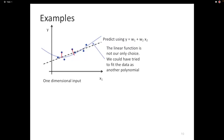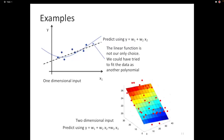In two dimensions, instead of a line we fit a plane through the data points. In higher dimensions it's a hyperplane. Unlike classification — where we just care about which side of the hyperplane a point is on — in regression we actually care about the plane itself as the function.